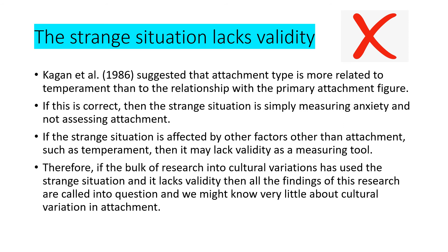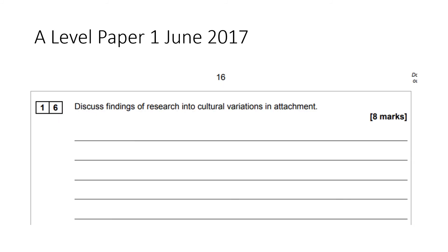A final limitation is that the strange situation lacks validity. Kagan et al. 1986 suggested that attachment type is more related to temperament — personality — than to the relationship with the primary attachment figure. If correct, the strange situation simply measures anxiety and doesn't assess attachment. If it is affected by factors other than attachment such as temperament, then it may lack validity as a measuring tool, and therefore all findings from research into cultural variation using the strange situation are called into question.